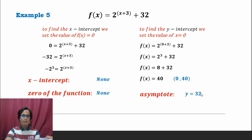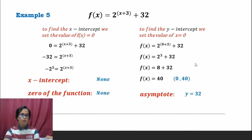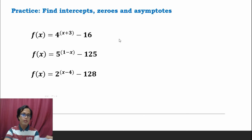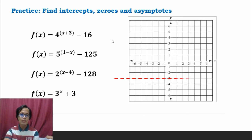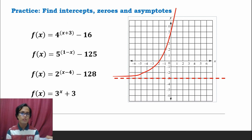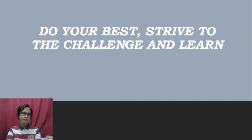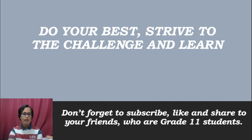That's it — we've covered examples 1 through 5. Now let's have a practice exercise: find the intercepts, zeros, and asymptotes of the given functions. I hope you learned something from this video. Do your best, strive to the challenge, and learn. Don't forget to subscribe, like, and share with your friends who are Grade 11 students. Thank you, and God bless.